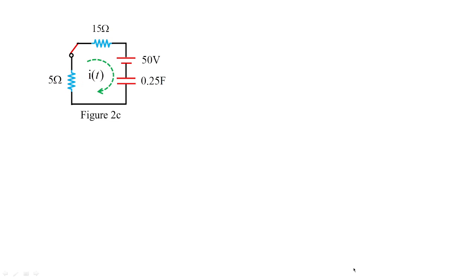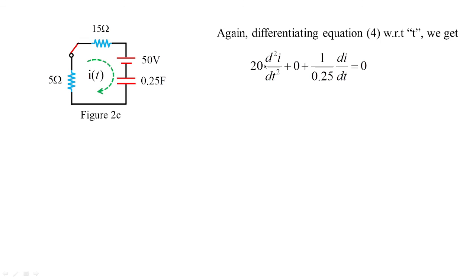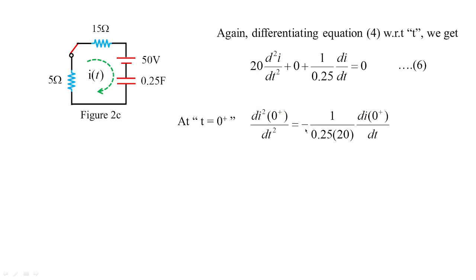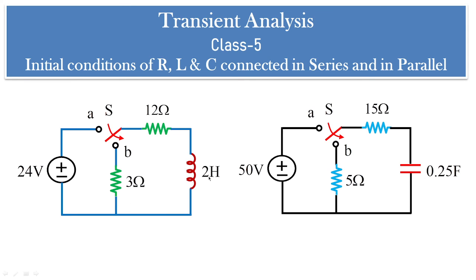To find d²i/dt² at t = 0 plus, we differentiate the equation 20·di/dt + 4i = 0, giving 20·d²i/dt² + 4·di/dt = 0. At t = 0 plus: d²i/dt²|₀₊ = −(1/(0.25 × 20)) × di/dt|₀₊ = −(0.5 / (0.25×20)) = −0.1 amperes per second squared. This is derived from equation 5 and completes the analysis for the capacitor circuit.